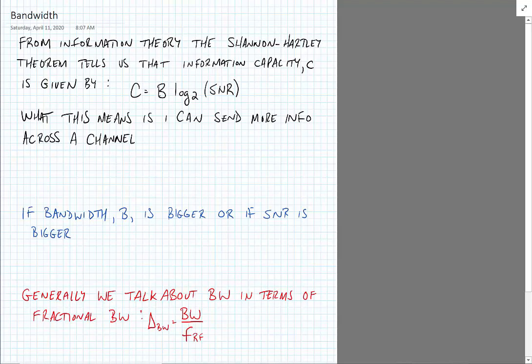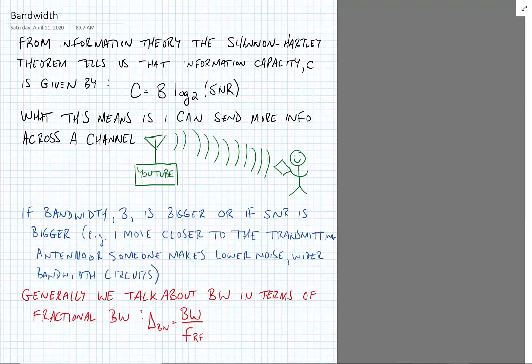And what this means is that I can send more information across the channel, and here I've drawn a channel as being say my YouTube coming from my computer being transmitted wirelessly to maybe a tablet that I'm holding. So I can send more information across the channel if the bandwidth B is bigger or if the SNR is bigger. What this generally means is that I could move closer to the transmitting antenna to improve my SNR, or someone, perhaps one of you, makes a lower noise wider bandwidth circuit.